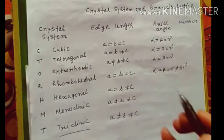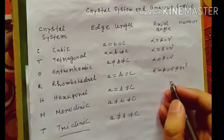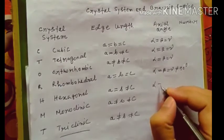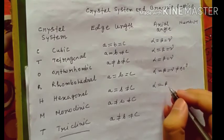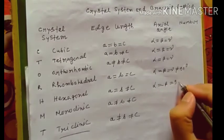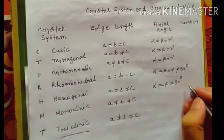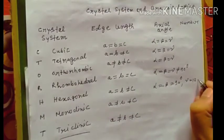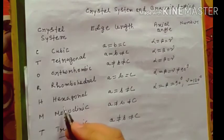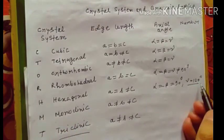Now hexagonal: alpha equal to beta equal to 90, and hexagonal rectangle 120. Hexa hex means 6, 12, the relationship, so 120 degree. So alpha equal to beta equal to 90 and gamma equal to 120.